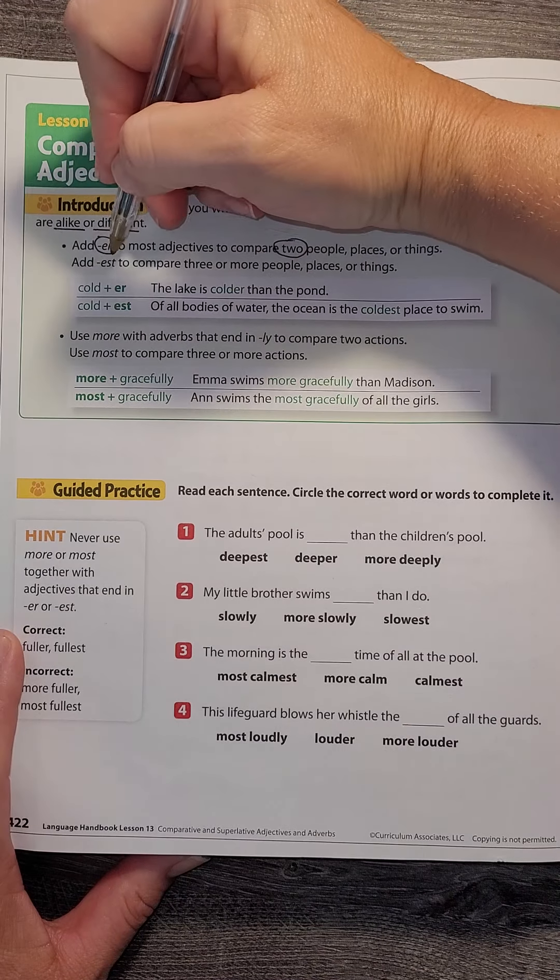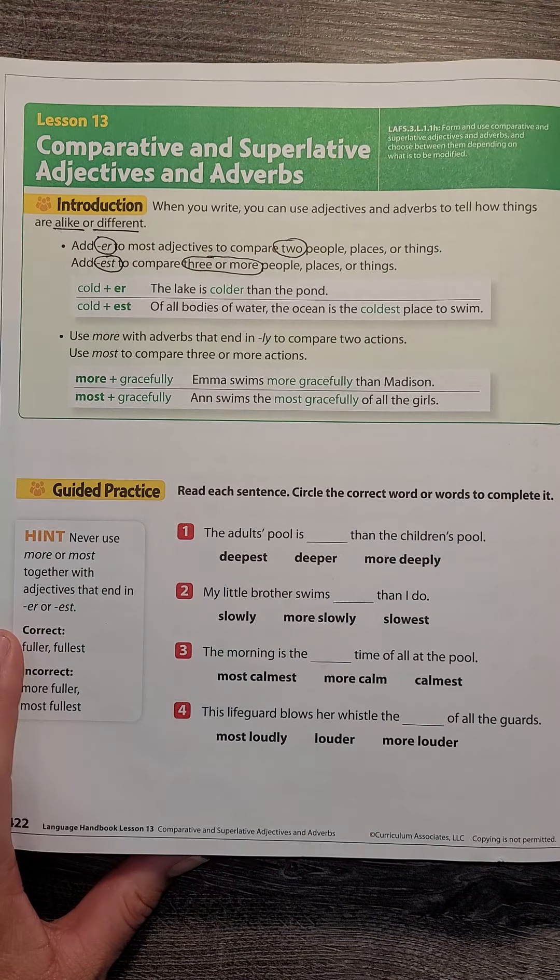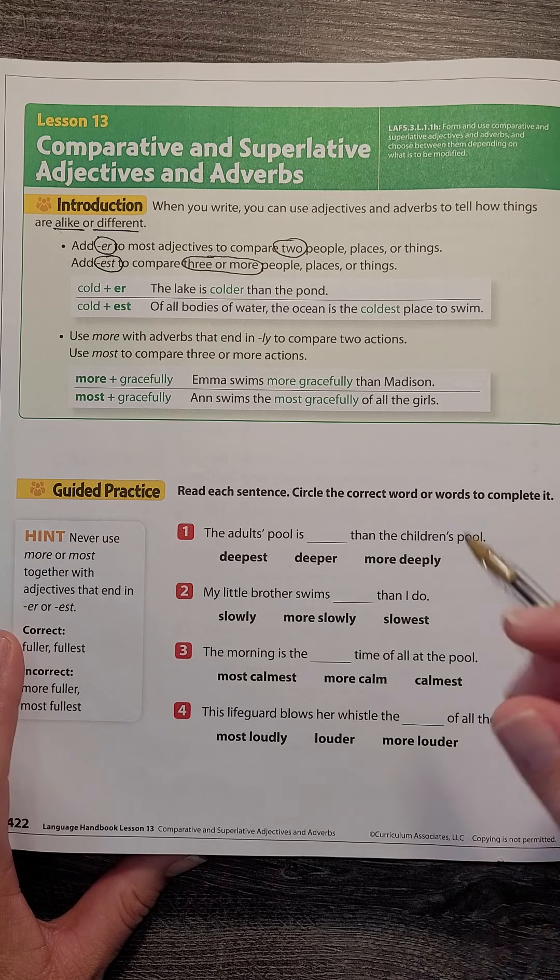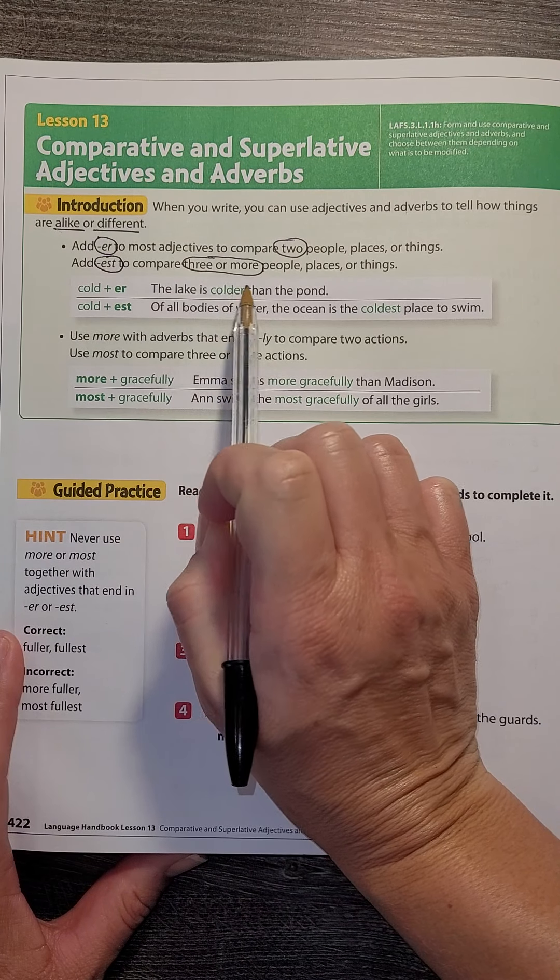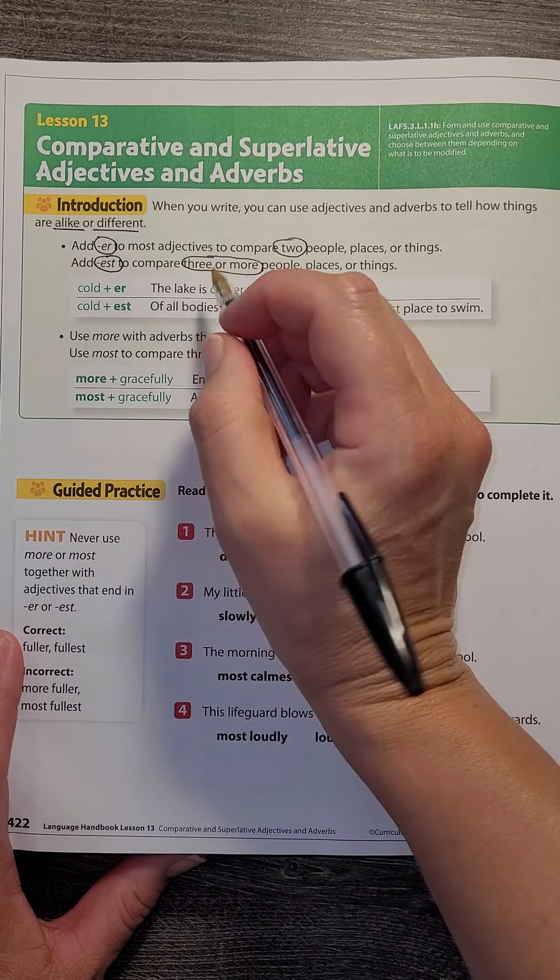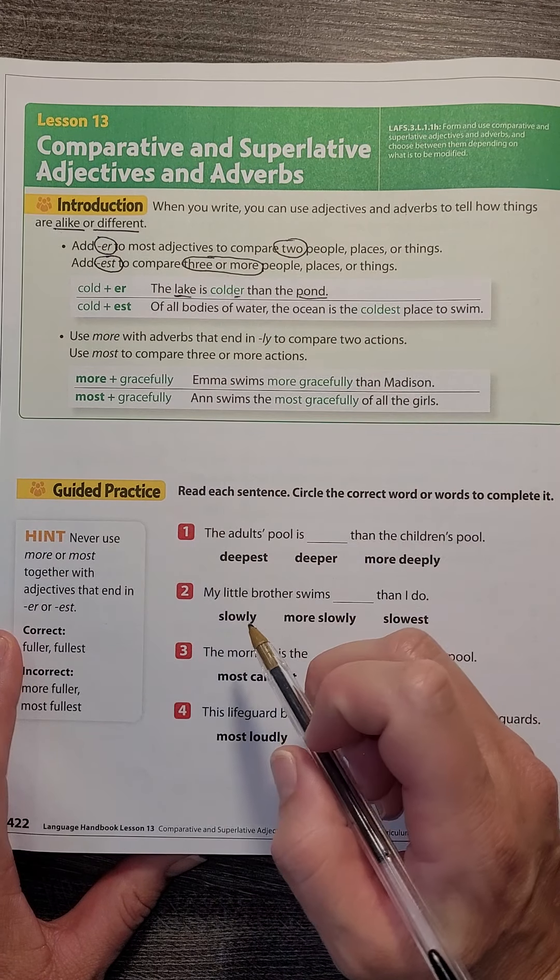When we're comparing more than two things, or three or more, we add -est. So for example, the lake is colder than the pond. I'm comparing the lake and the pond, which is two, so I say colder.